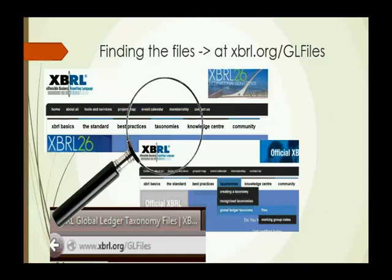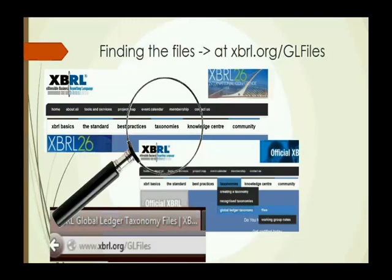So let's begin. How do we find them? You can go directly to www.xperial.org/glfiles, or you can follow along from the xperial.org main page. Xperial GL is a taxonomy framework, and so Xperial files are found in the taxonomies section. When you click on taxonomies, you'll see recognized taxonomies and then the global ledger taxonomy listed separately. You can click into that, or if you hover over, it will open up into the files and working group notes. Clicking on the files brings you to xperial.org/glfiles.